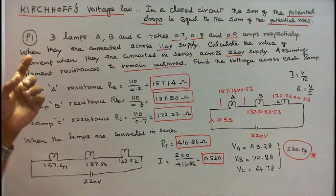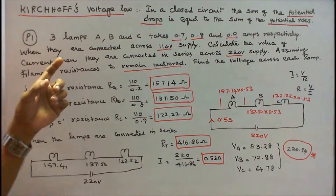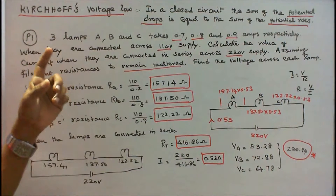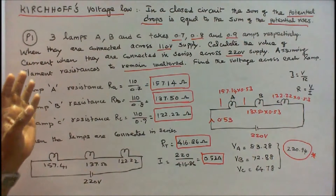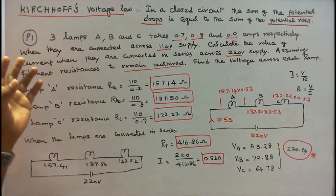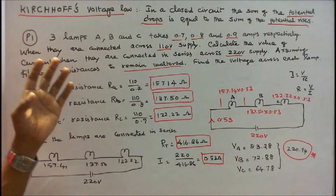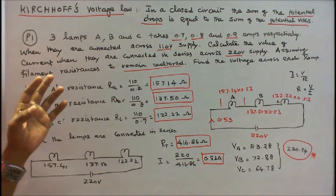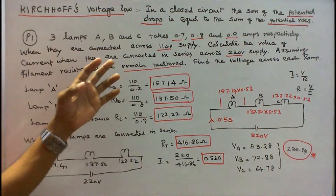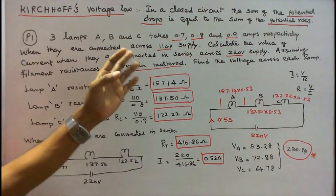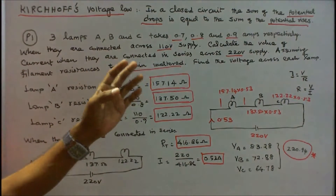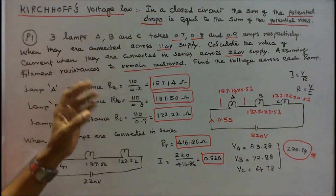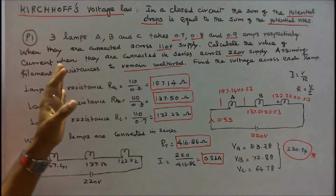Problem No. 1: Three lamps A, B, and C take 0.7, 0.8, and 0.9 amps respectively when they are connected across a 110V supply. Calculate the value of current when they are connected in series across a 220V supply, assuming filament resistance to remain unaltered. Find the voltage across each lamp.